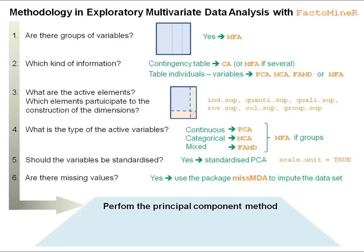Once you have answered all these questions, you can perform the principal component method — PCA, MCA, factorial analysis on mixed data, or MFA. Then you will want to interpret the results. To better interpret the results, you can use the function named dimdesc, which will describe the dimensions using the original variables — both the active and the supplementary variables, both continuous and categorical — as a tool to better interpret the results.